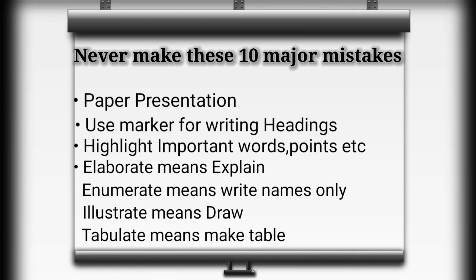The ninth mistake is related to the tabulate term. If you are asked to tabulate anything — for example, certain factors — most students do not tabulate; they just write paragraphs and explain everything. If it is a comparison between two things, you will have to compare them in a tabulated manner. For example, if you are asked to tabulate the origin, insertion, nerve supply, and action of a muscle, you must tabulate it. Examiners look for a table first, and if you haven't tabulated, they get irritated and may give you only three or four marks out of five.